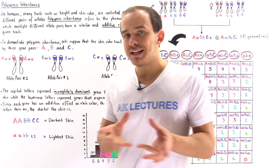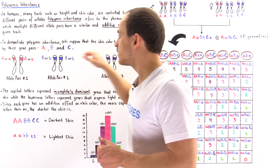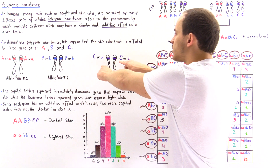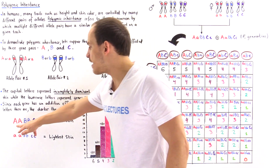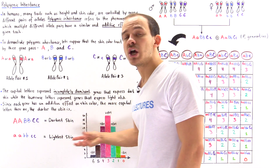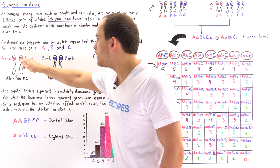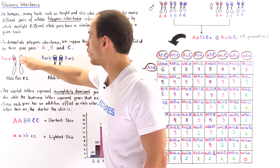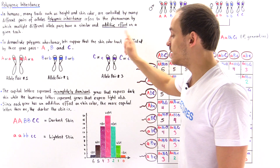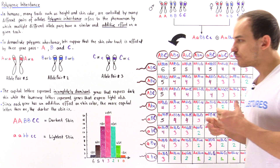For example, if all of the genes in a given individual contain uppercase letters — uppercase AA, uppercase BB, uppercase CC — this represents the darkest possible skin color. And likewise, if all of them are lowercase — lowercase aa, lowercase bb, lowercase cc — then we have the lightest possible skin color.